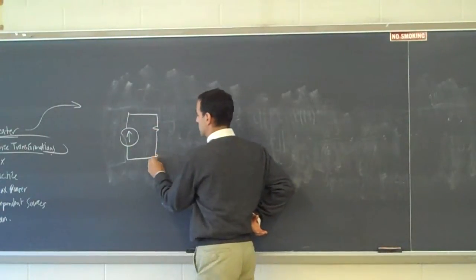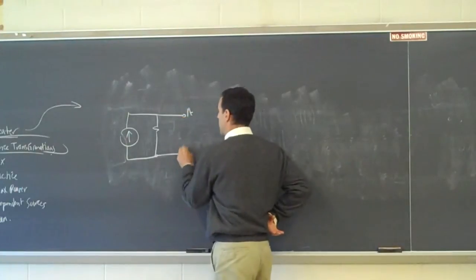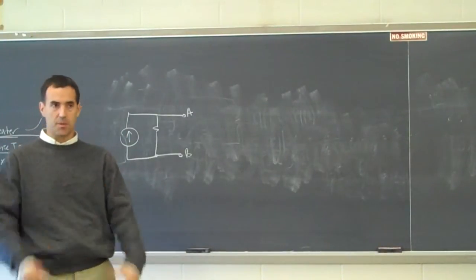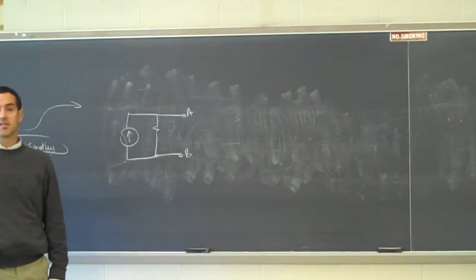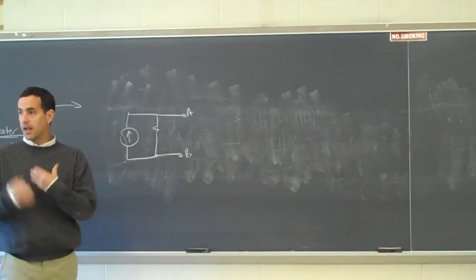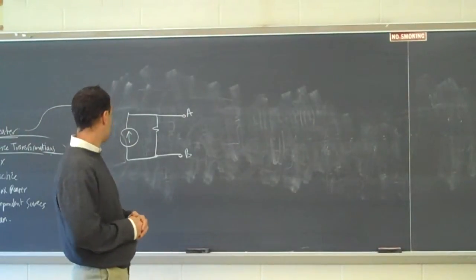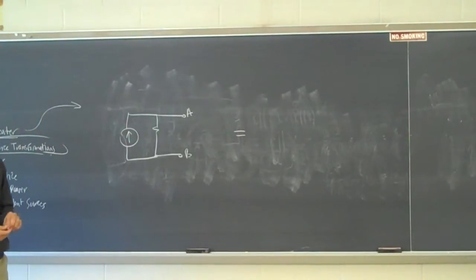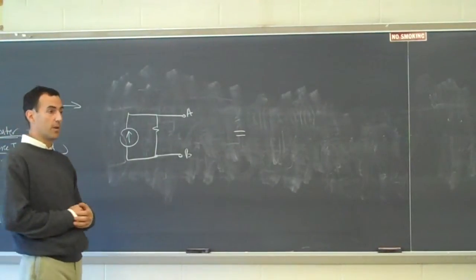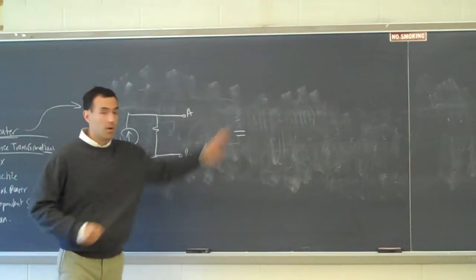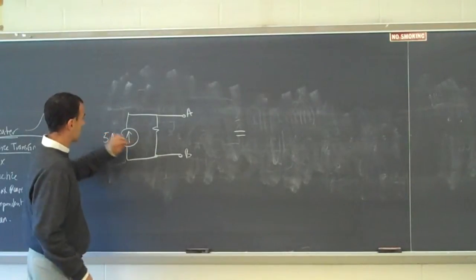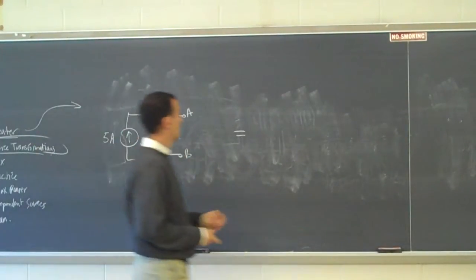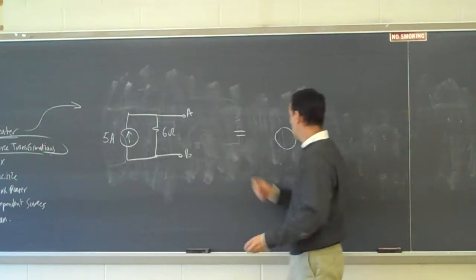We have the current source and the resistor from A to B, and my first action is not going to be to simplify it, but to rewrite it in a different representation. My goal with this process is to simplify circuits, but as part of that, I need to show you some skills we'll use to do that. The very first skill is to replace this circuit with something that's equivalent — meaning somebody electrically could not tell the difference. There's no measurement you can make that would allow you to tell the difference. So suppose I've got a 5-amp current source and a 6-ohm resistor. I claim I can replace this circuit with one that, instead of having a current source, has a voltage source.